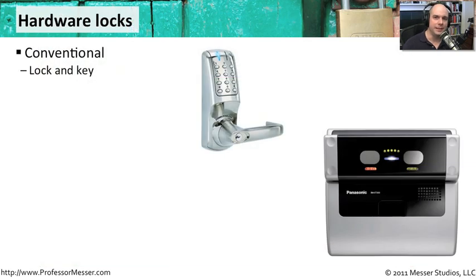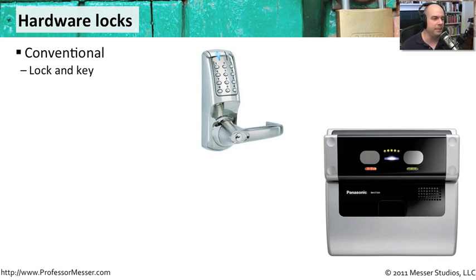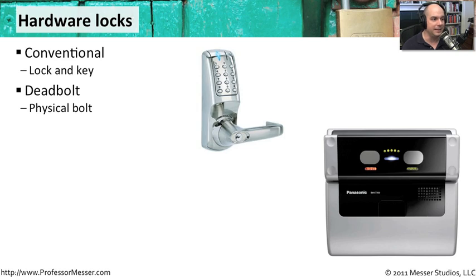We have many different options these days for physically locking a door. We can have, of course, the traditional lock and key. It's a very low-security type system, but it's one that's very easy and very inexpensive to implement. These days, you might also want to add things like deadbolts if you really want to protect some systems.